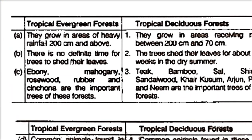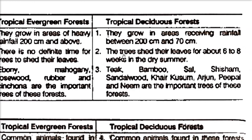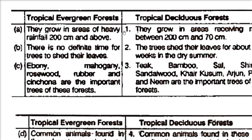In tropical evergreen forests, there is no definite time for trees to shed their leaves. Some may shed, some may not, and the forest will always seem evergreen. In tropical deciduous forests, the trees shed their leaves for about six to eight weeks during the dry summer season.